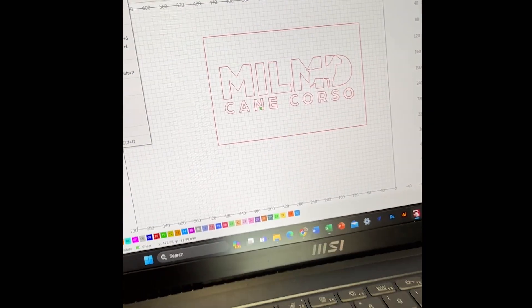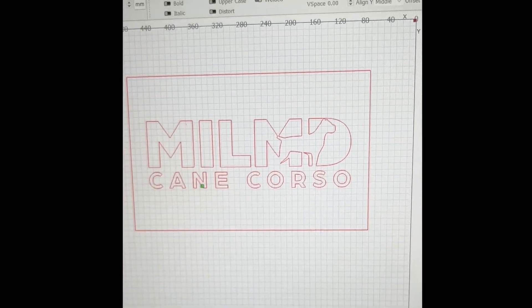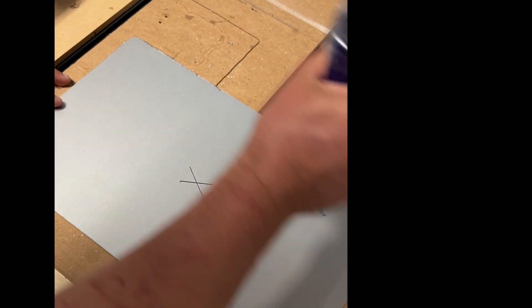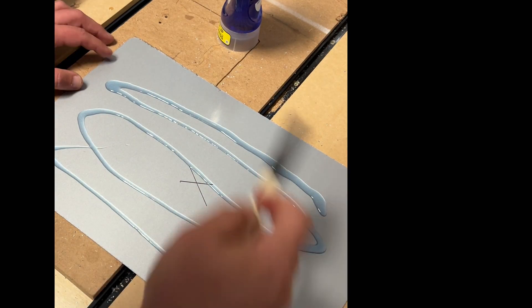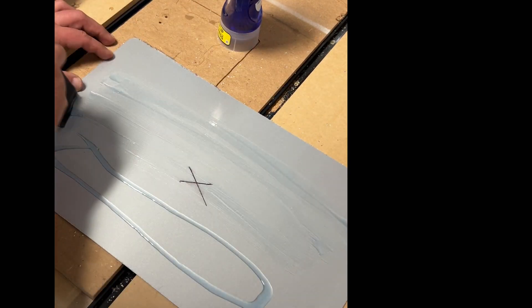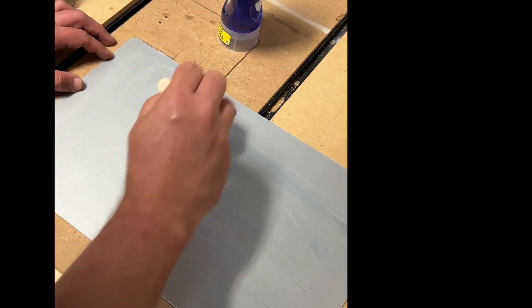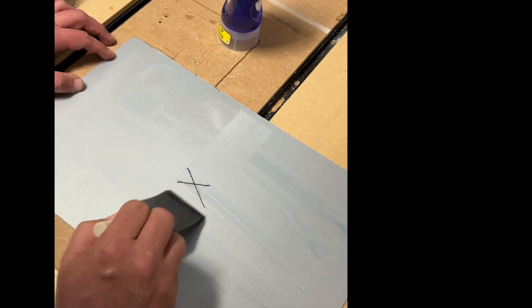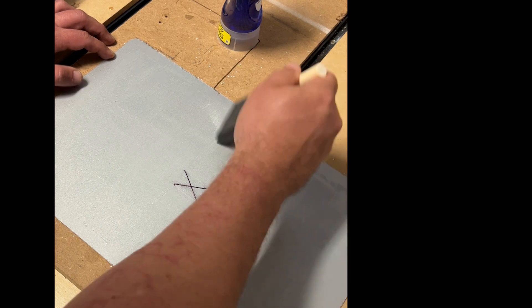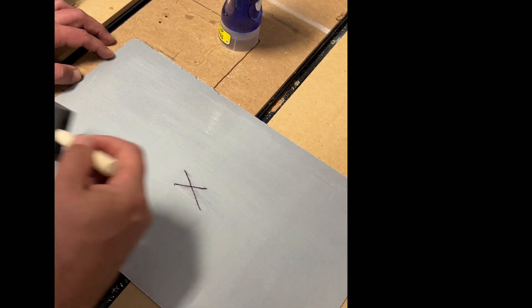For the laser I used Lightburn and this is just a really simple SVG. I've found center and something I do with acrylic a lot, I've never done it with metal, is I smear it with dish soap. The science behind it is basically that it defocuses your laser just a little bit and causes your lines per inch to be smoother.